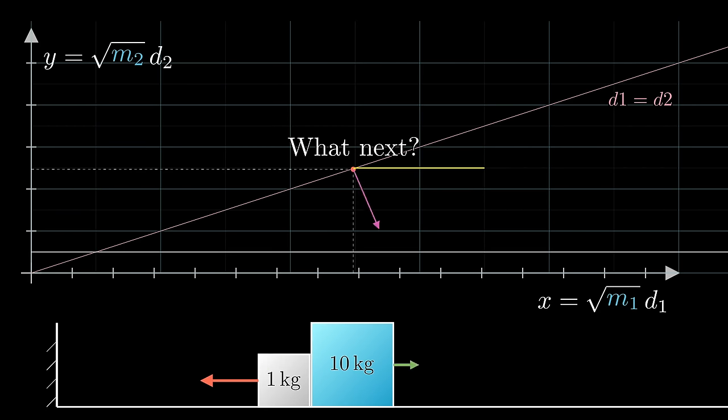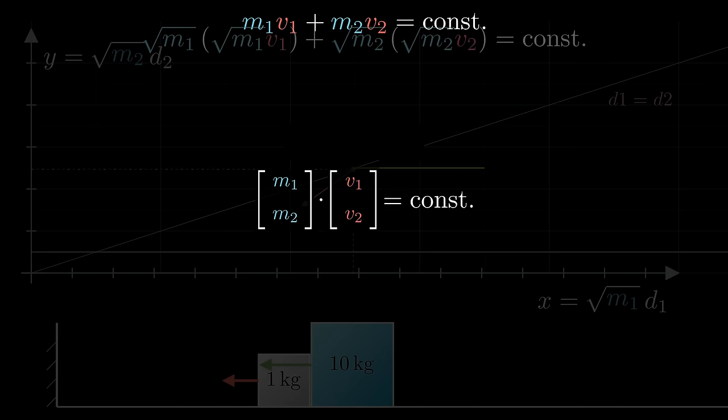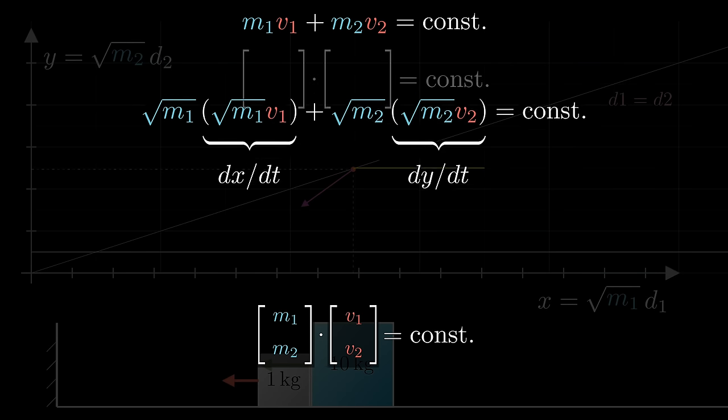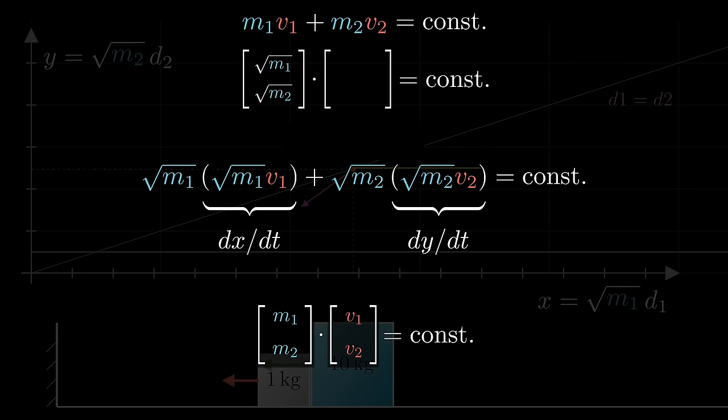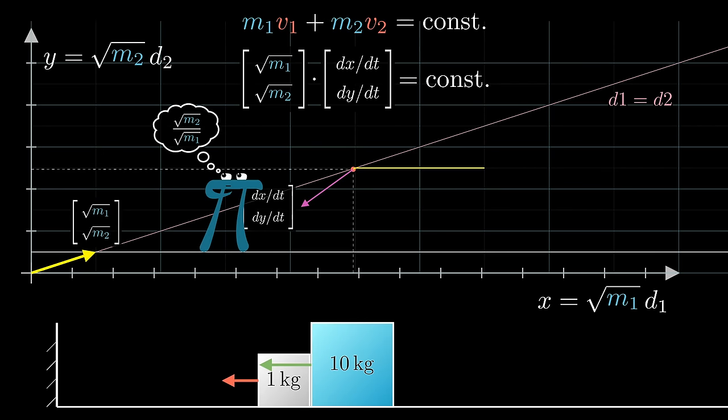After the blocks collide, meaning our point hits this line, the way to figure out how they move is to use the conservation of momentum, which says that the value m1 times v1 plus m2 times v2 is the same both before and after the collision. Now notice, this looks like a dot product between two column vectors, m1 m2 and v1 v2. Rewriting it slightly for our rescaled coordinates, the same thing could be written as a dot product between a column vector with the square roots of the masses, and one with the rates of change for x and y. I know this probably seems like a complicated way to talk about a comparatively simple momentum equation, but there is a good reason for shifting the language to one of dot products in our new coordinates. Notice, that second vector is simply the rate of change vector for the point in our diagram that we've been looking at. The key, now, is that this square root of the masses vector points in the same direction as our collision line, since the rise over run is square root m2 over square root of m1.